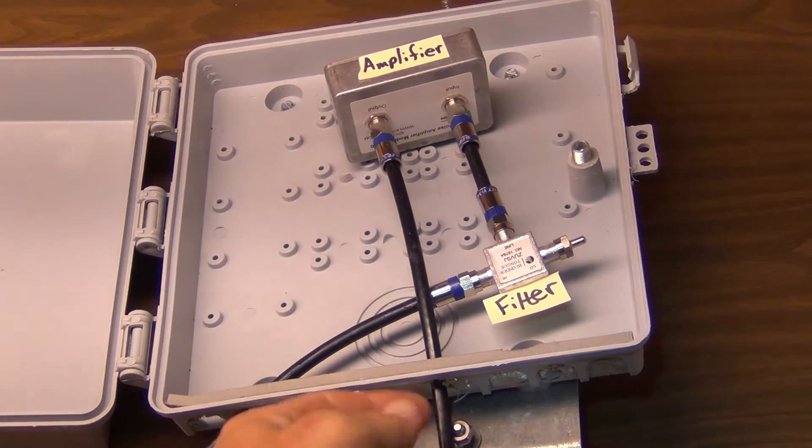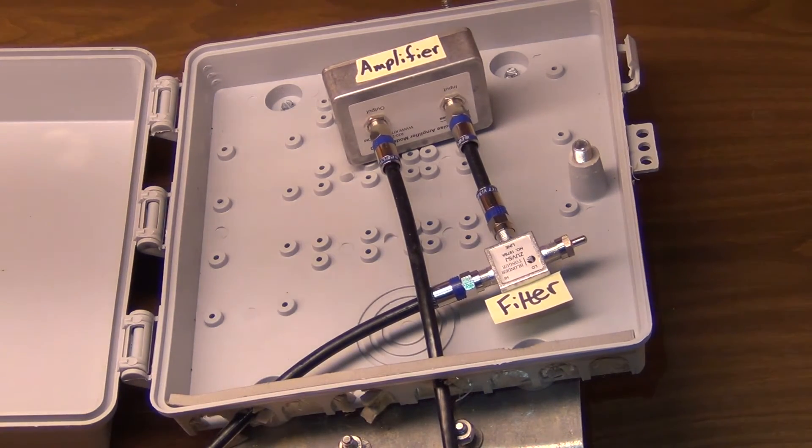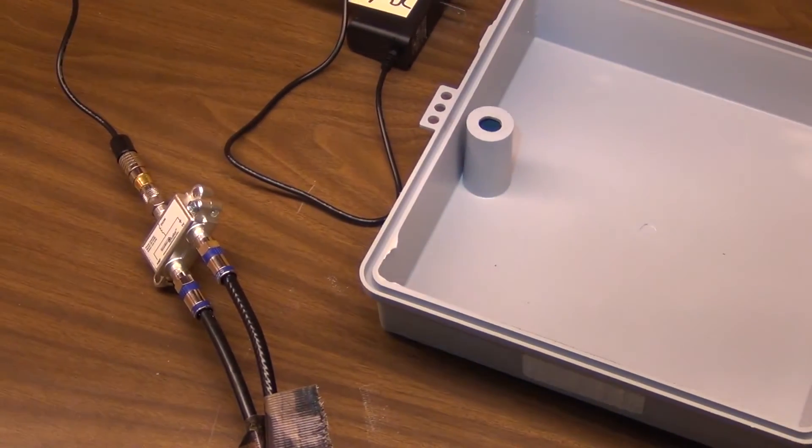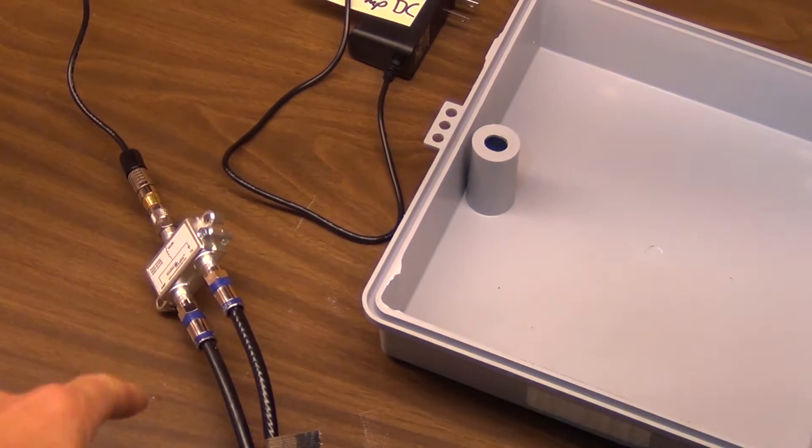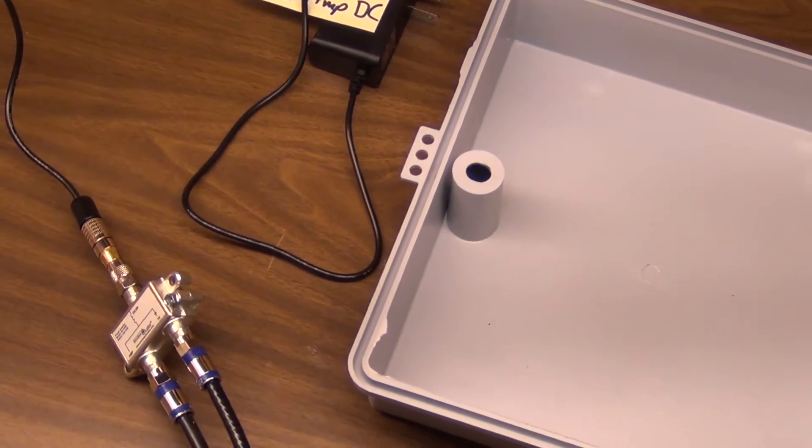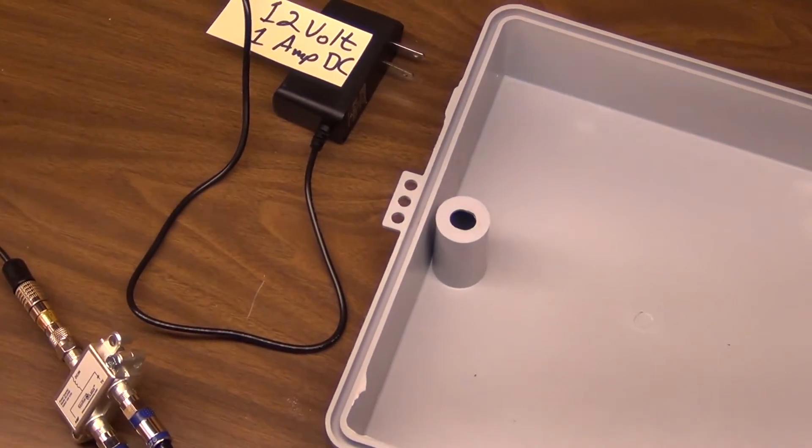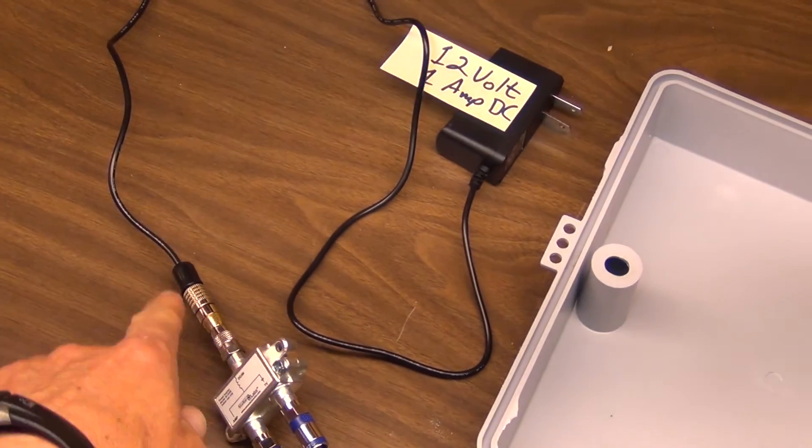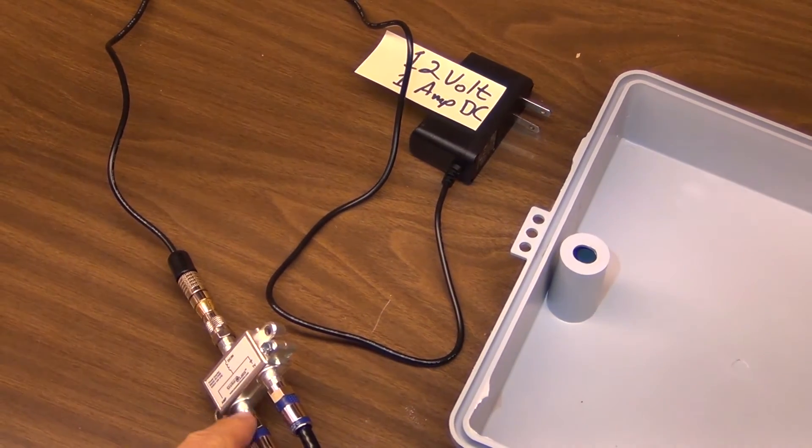And then the output here goes to a power inserter, which is this device over here, the power inserter that you get from KITZ Technology. This puts the 12 volt, I can show you that a little bit better there, 12 volt 1 amp DC into here, and then this side here goes to the amplifier, which is the output.